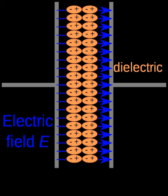A dielectric or dielectric material is an electrical insulator that can be polarized by an applied electric field. When a dielectric is placed in an electric field, electric charges do not flow through the material as they do in an electrical conductor, but only slightly shift from their average equilibrium positions, causing dielectric polarization.